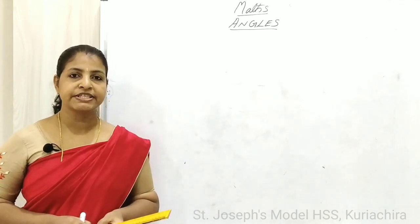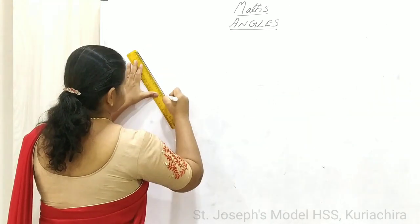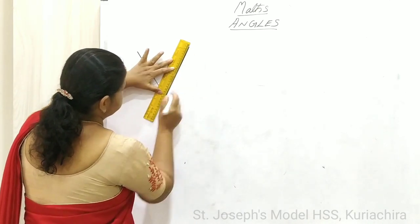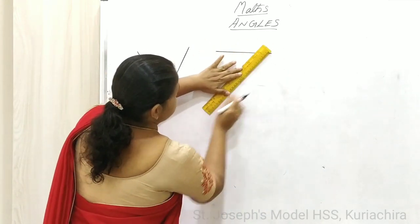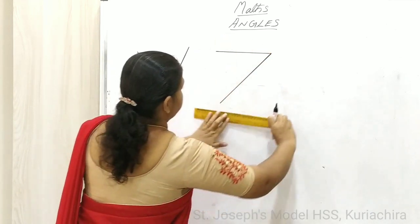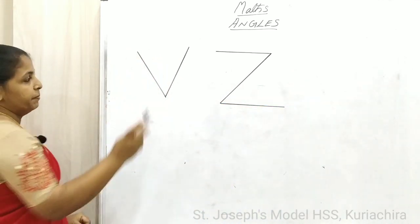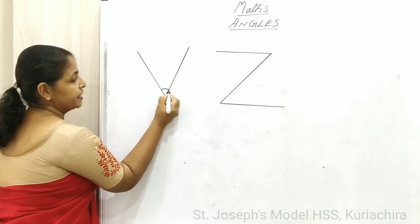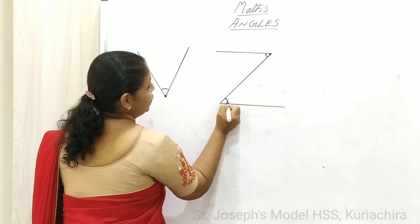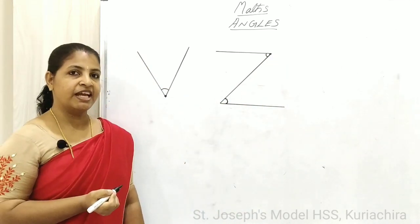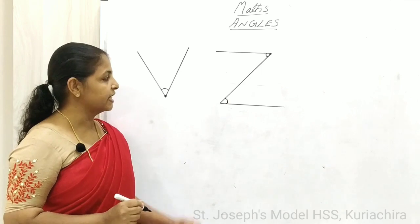Next I will tell you some English letters that form an angle. Consider letter B and the letter C. In letter B, two lines are meeting at this point and an angle is formed. Similarly, in the letter C, two lines are meeting at this point and angles are formed.